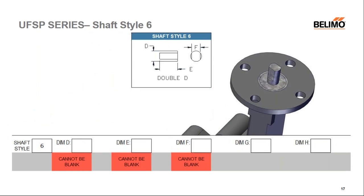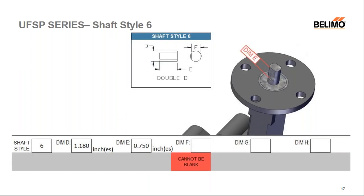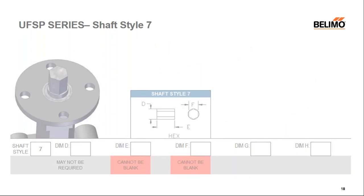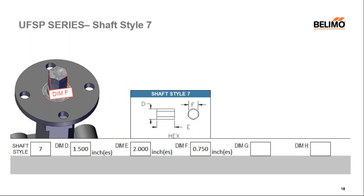Shaft style six is a double D. Required fields are shown in red below the selection. Dimension D is the diameter of the shaft, dimension E is the length of the double D, and dimension F is the distance from flat to flat. Shaft style seven is a hexagon. Dimension D is the overall diameter of the shaft, dimension E is the length of the hexagon on the shaft, and dimension F is the distance from flat to flat.